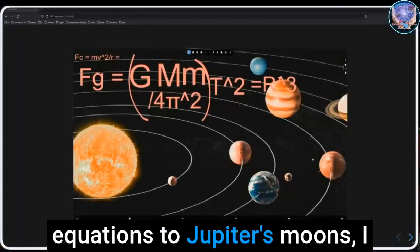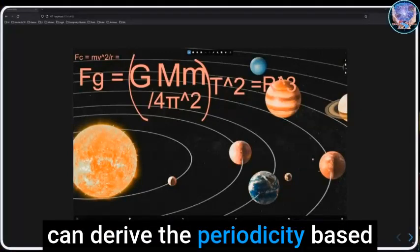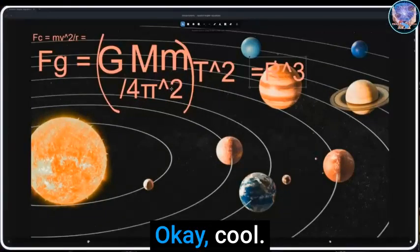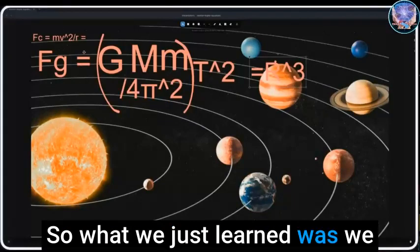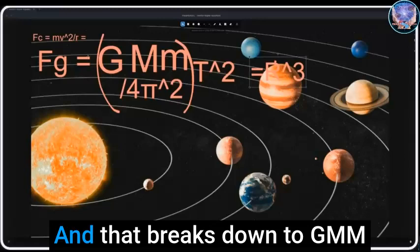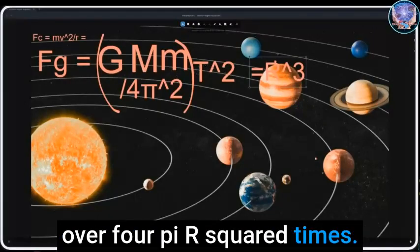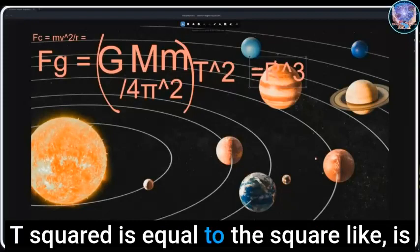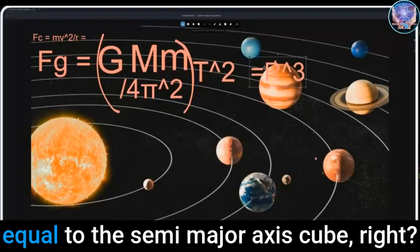So people will say, okay, how come when I apply Newton's equations to Jupiter's moons I can derive the periodicity based on Jupiter's mass and all that? Okay cool. So what we just learned was we were going to apply centripetal force to being equivalent to gravitation.